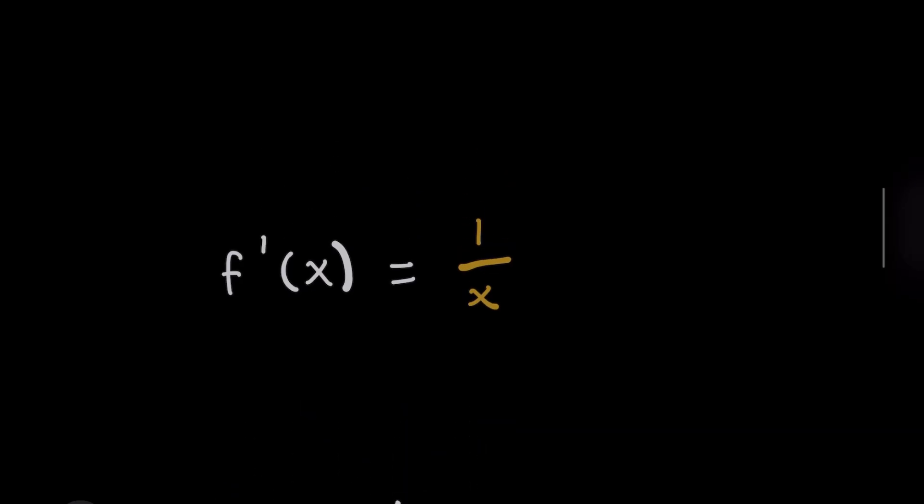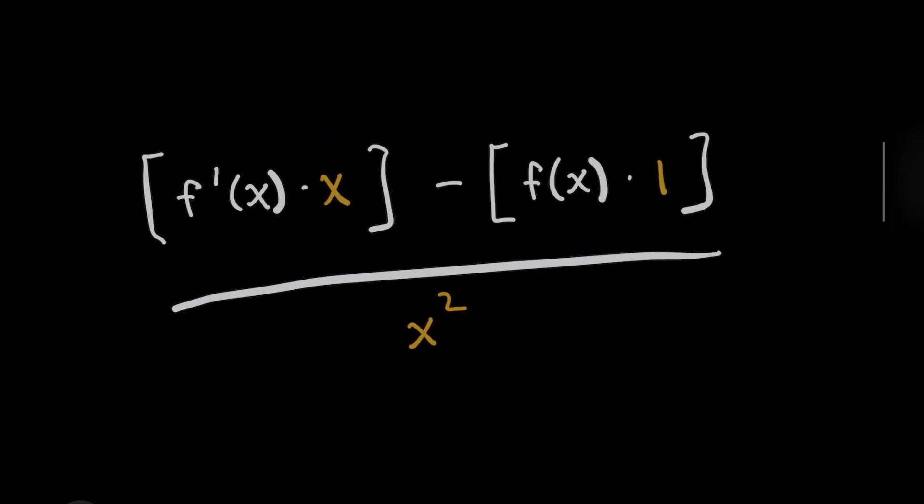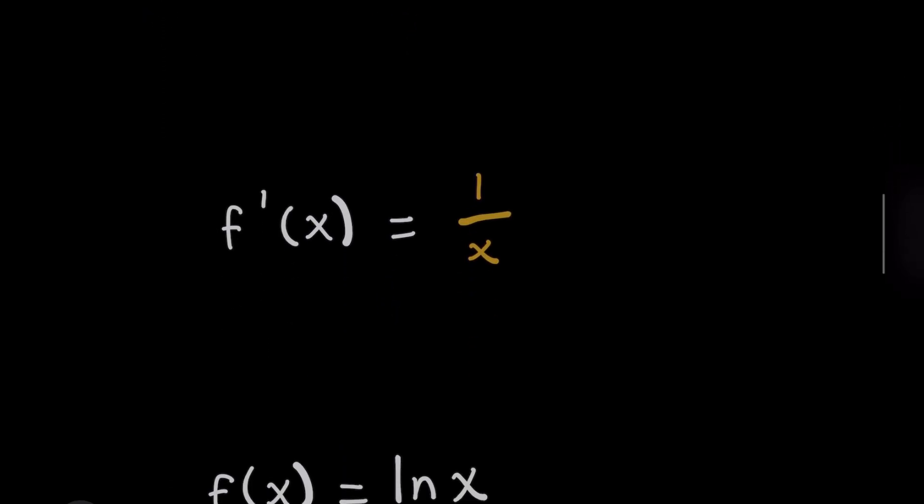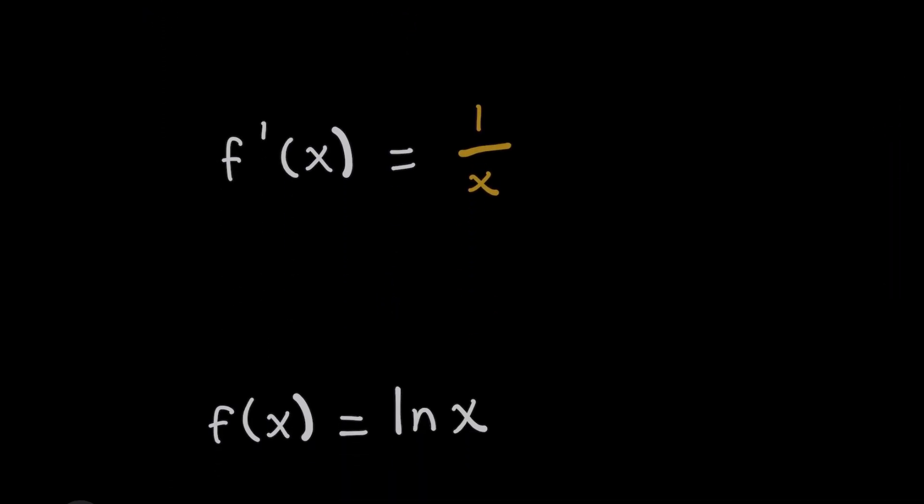And then we just got to confirm whether or not 1 over x, which is this way of undoing the x here on the left, that way the product is a 1, is satisfying the derivative for f of x. And it does, because the derivative of natural log of x is 1 over x.